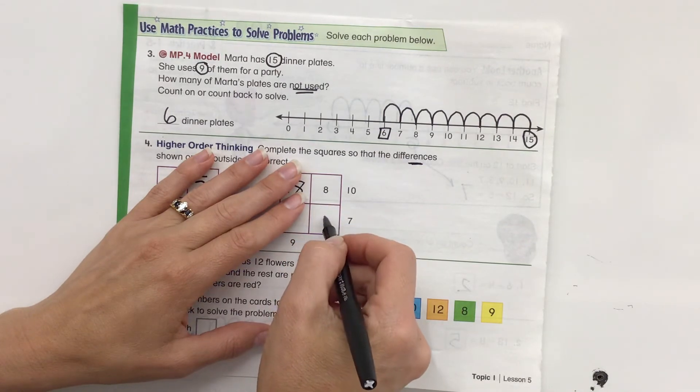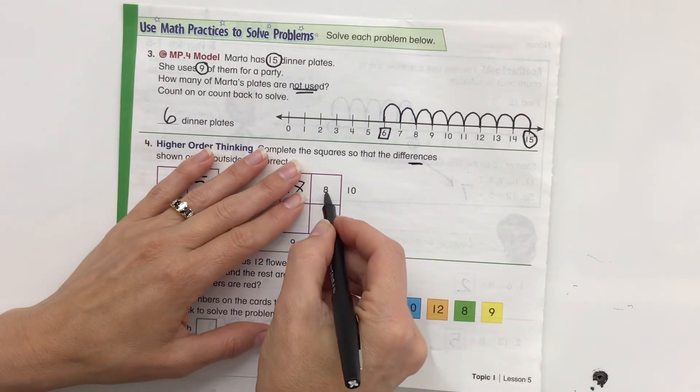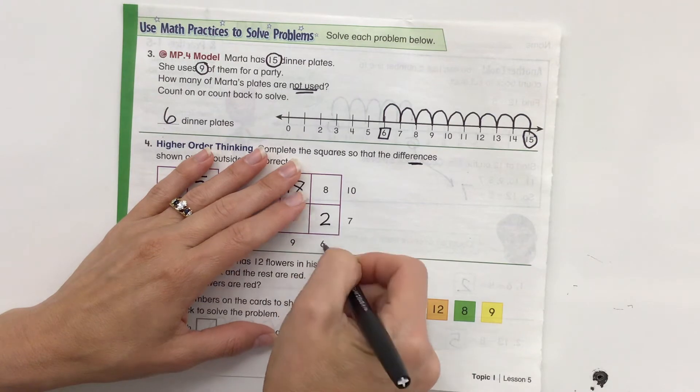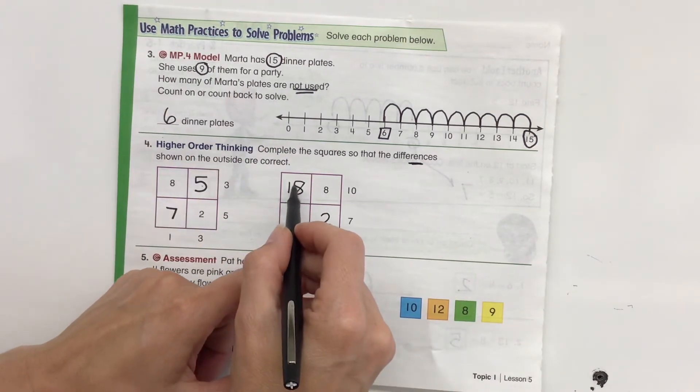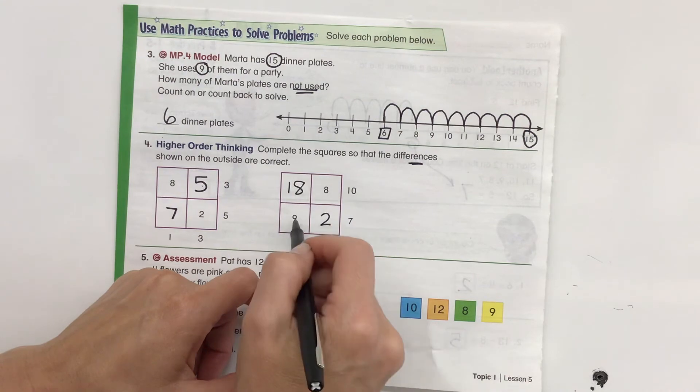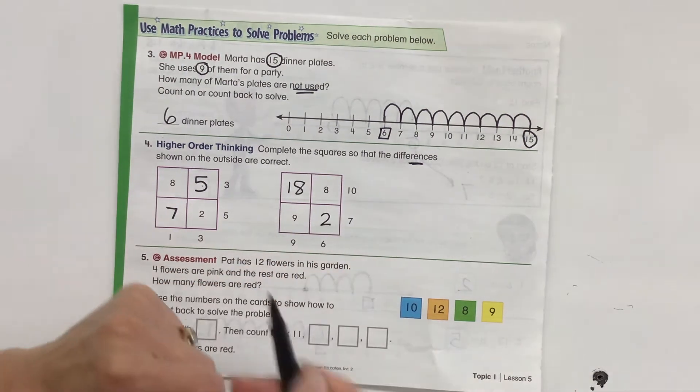Now let's take a look over here. 8 minus something equals 6. 8 minus 2 equals 6. Then we can check it this way also. So 18 minus 8 is 10. 9 minus 2 is 7.